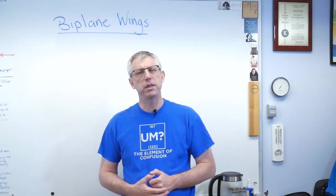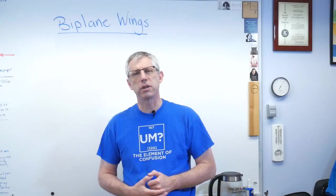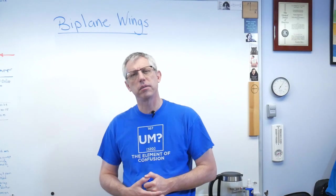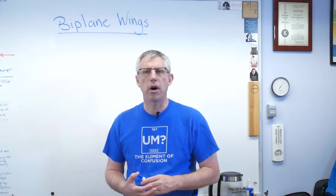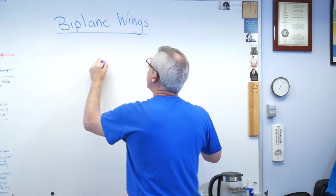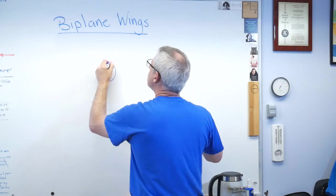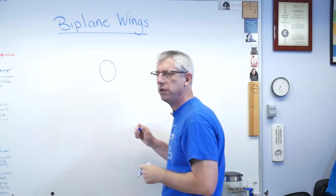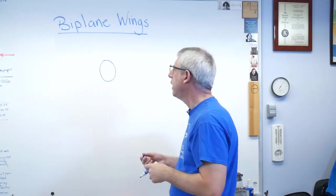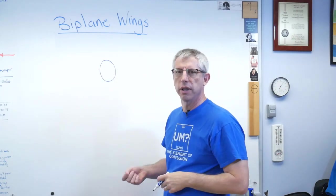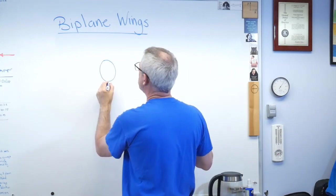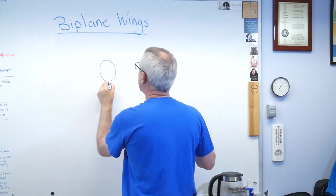So what is it that makes a biplane interesting when we talk about statics? Well, let's draw a picture. Let's look at the biplane from the front. Here's a fuselage — the fuselage is just the body of the plane. That's where the engine lives, the pilot, and a bunch of other stuff. A lot of times the fuel is in there too.